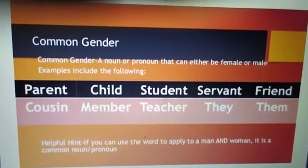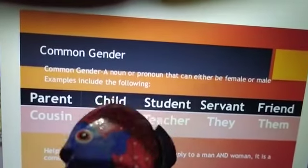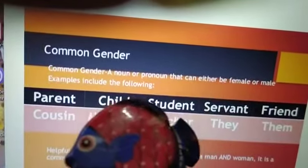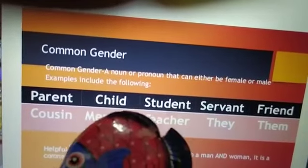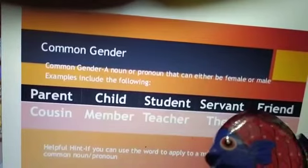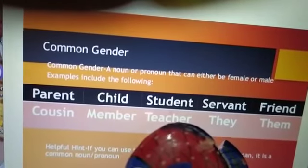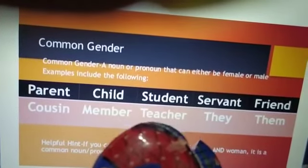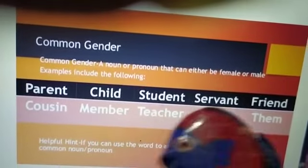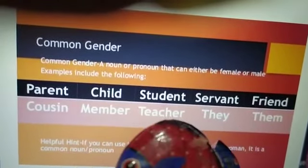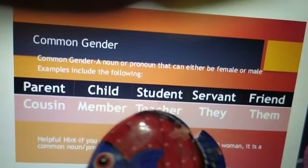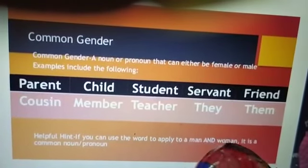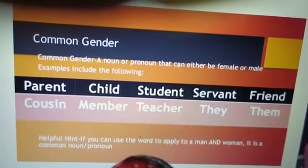Common gender: a noun or pronoun that can either be female or male. Examples include: parent, child, student, servant, friend, cousin, member, teacher, they, them. They refer to both genders — for example, a teacher can be female or male. Helpful hint: if you can use the word to apply to both a man and a woman, it is a common noun or pronoun.